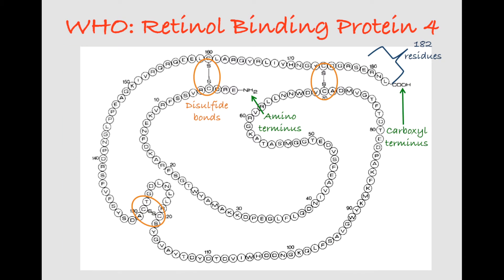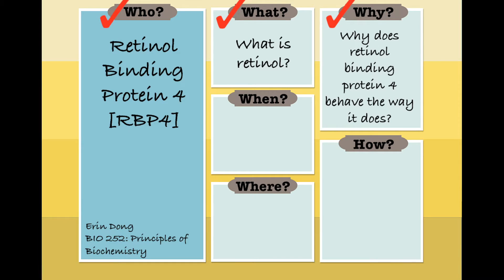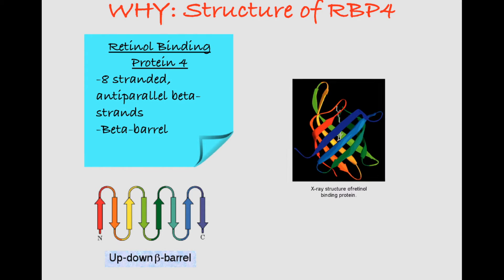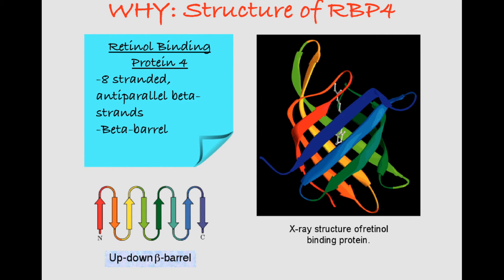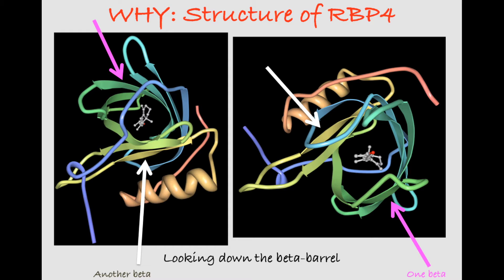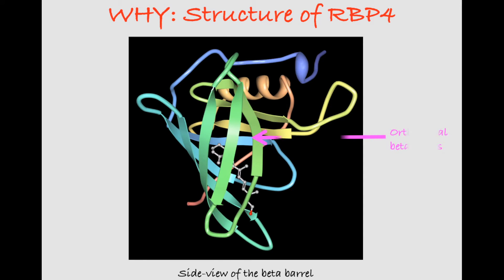Having touched upon the structure of RBP, let's move on to our next question: why? Based on its structure, why does RBP behave the way that it does? Characteristic to the lipocalin family, RBP is composed of eight anti-parallel beta strands. By folding over each other, the eight strands twist to form a hollow beta barrel. If we take a look down either end of the beta barrel, it seems like the barrel can be divided into two beta sheets with a retinol sandwiched in between. By taking a side view of the barrel, we see that these two beta sheets are orthogonal to each other. The hollow center of the barrel creates a ligand binding pocket that's specifically for retinol.